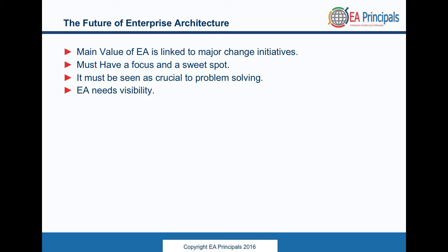The future of enterprise architecture — the main value, I think, is linked to major change initiatives. It's not that you're doing enterprise architecture for every minor change, but that you're getting engaged on the really big things. I see that as where people have to focus better in their EA practices. Graham alluded to the fact that it's hard to get all the information, but it's even harder to maintain it all as you're collecting new information. So if you're going to succeed, you have to have a focus, and a sweet spot would be the major transformation investments you're making.